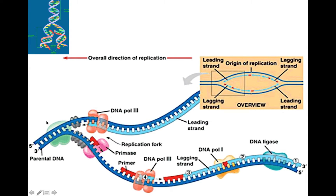There are single stranded binding proteins that bind to the single stranded DNA that helicase — this enzyme in green — has just created by breaking the hydrogen bonds that hold the two strands together. What's not shown on this diagram is where gyrase is, right up here. It would be acting right up here to break those double strands and release the tension as the replication fork continues up the molecule.